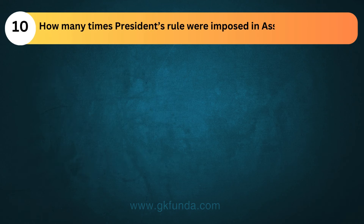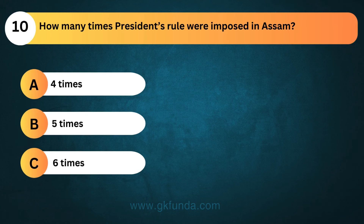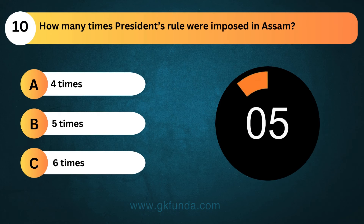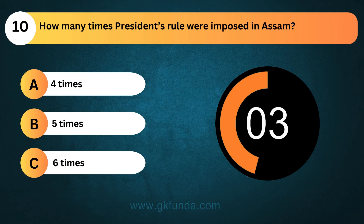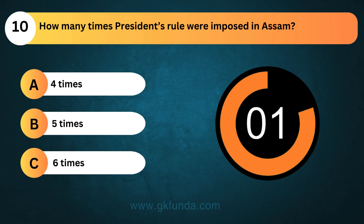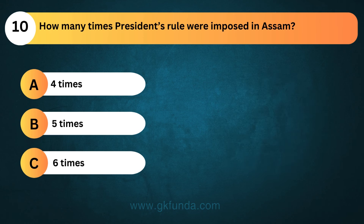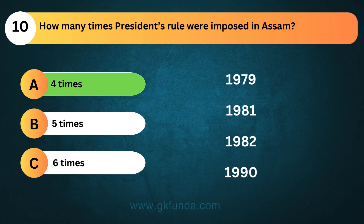How many times was President's rule imposed in Assam? The answer is option A, four times — in the years 1979, 1981, 1982, and 1990.